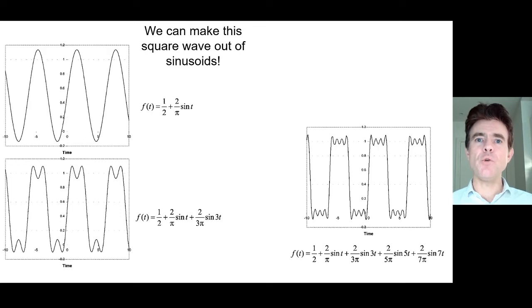Indeed, if we keep going with this - if we add on another sine wave of 5t with another coefficient, another weighting factor, and then another one, sin(7t) with a different coefficient or amplitude - you can see even more that as we add on more and more frequencies of these sinusoidal functions, we're getting closer and closer to that original square waveform.